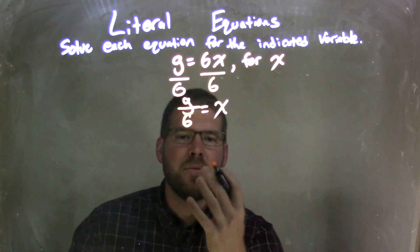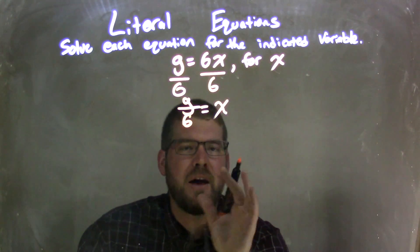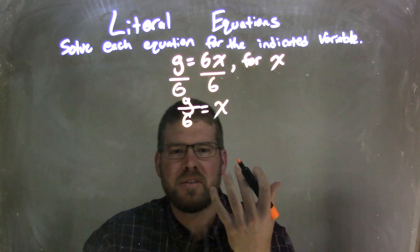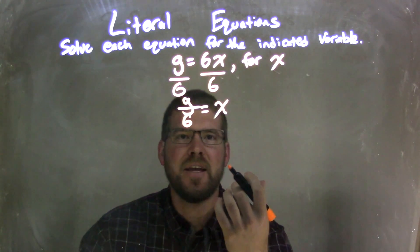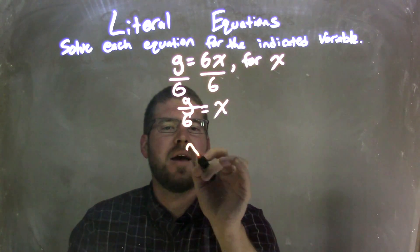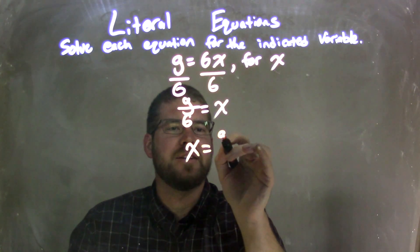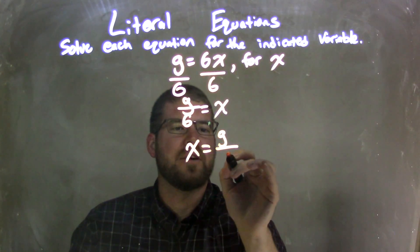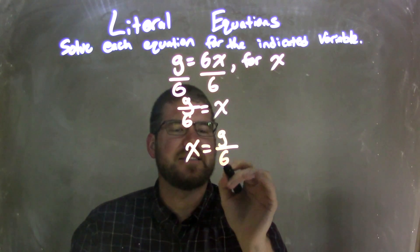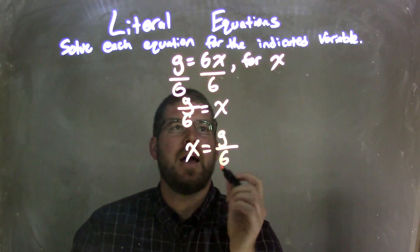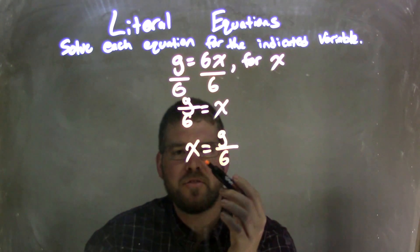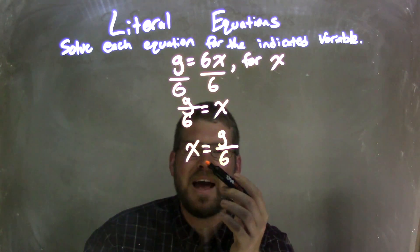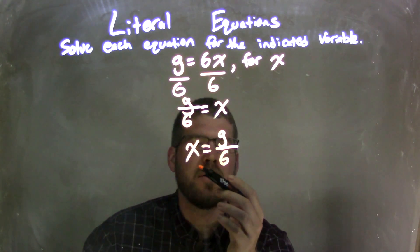I'm going to rewrite that and have x come first, because that looks a little neater. So x comes first, equals g over 6, and now I have solved for x by itself.